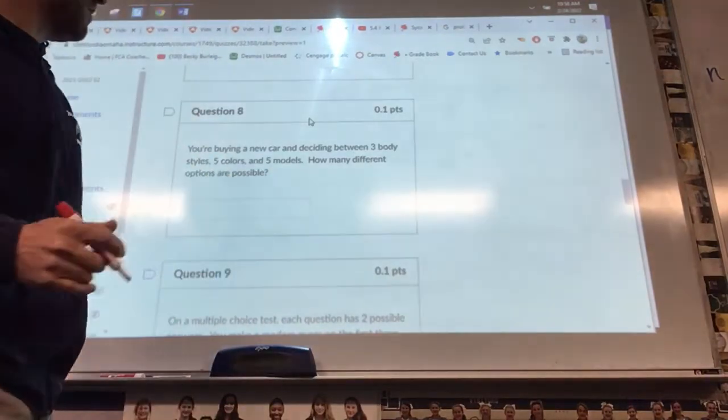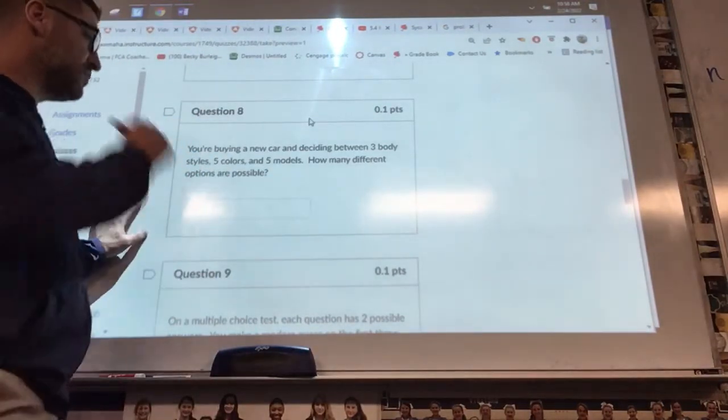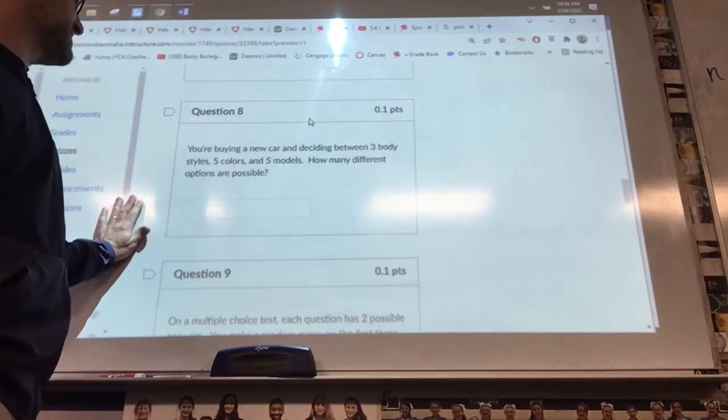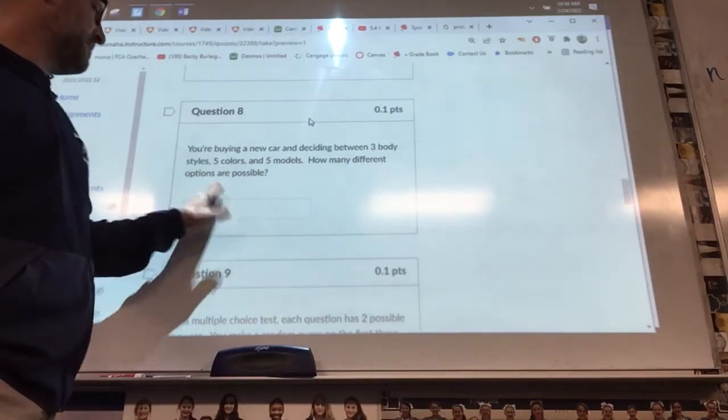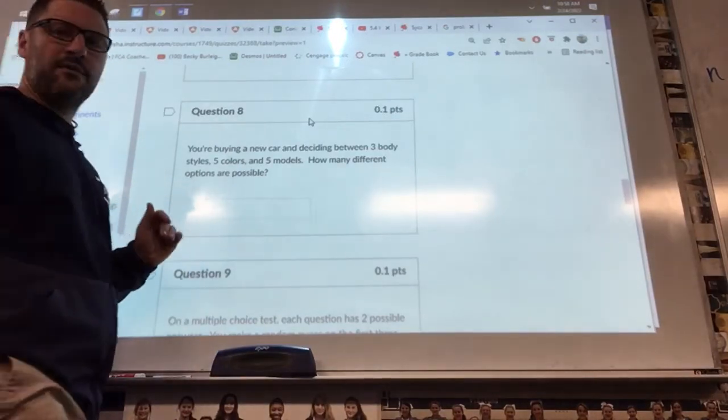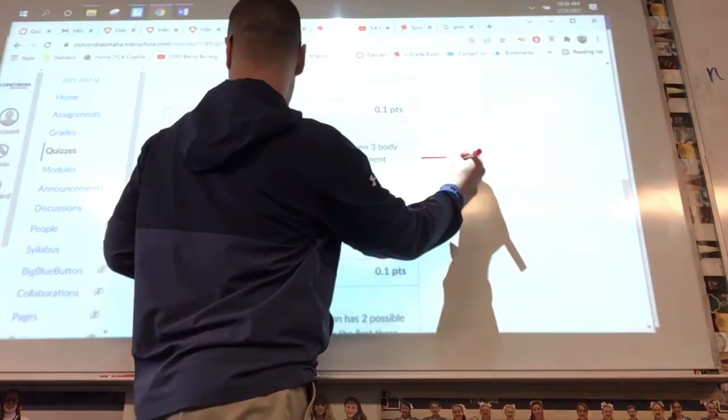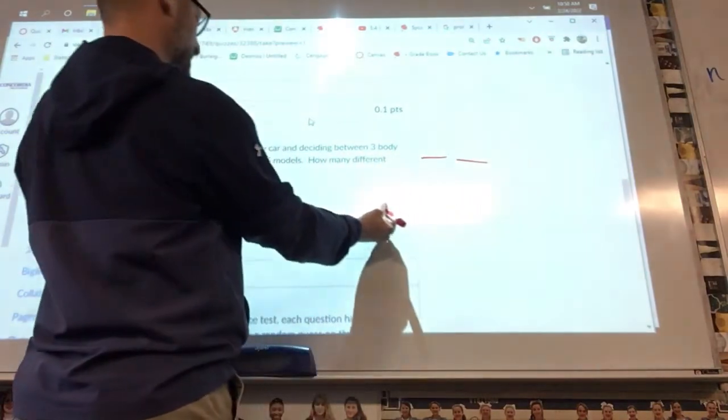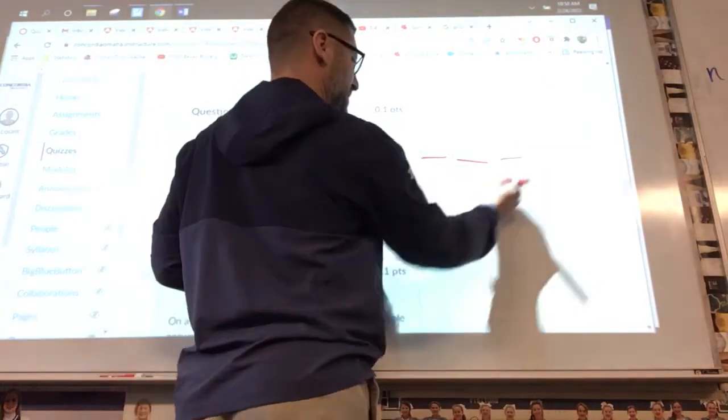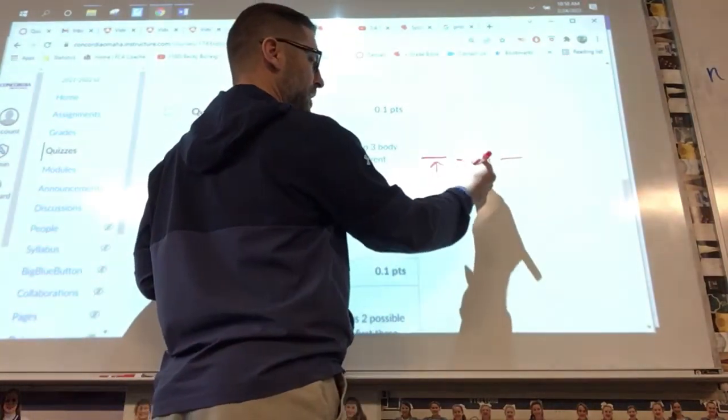The first one, you're buying a new car. This is question eight. You're buying a new car and want to decide between three body styles, five colors, and five models. How many different options are available? And I would use the fundamental counting principle in this. I got three options, I got five colors, and I got five models.